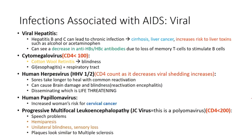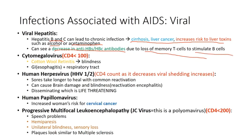Viral hepatitis is quite common among HIV/AIDS patients because HIV, hepatitis B, and hepatitis C share transmission routes including IV drug use. Co-infection leads to chronic liver damage, liver cancer, cirrhosis, and increased risk from liver toxins like alcohol and acetaminophen. In AIDS patients, HBs and HBc antibodies decrease because loss of memory T cells means loss of B-cell stimulation, so antibody production drops.